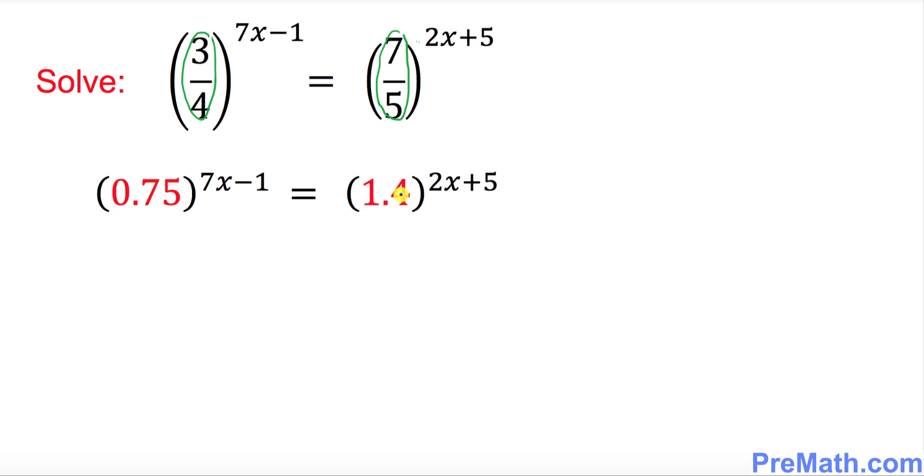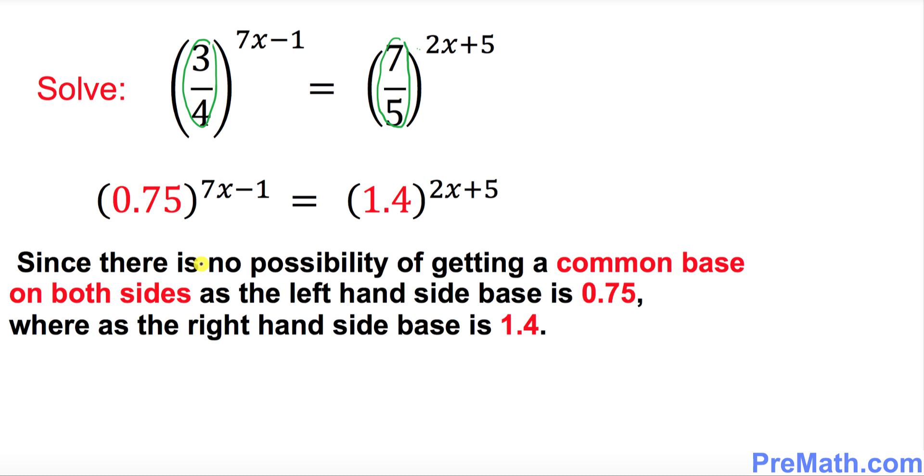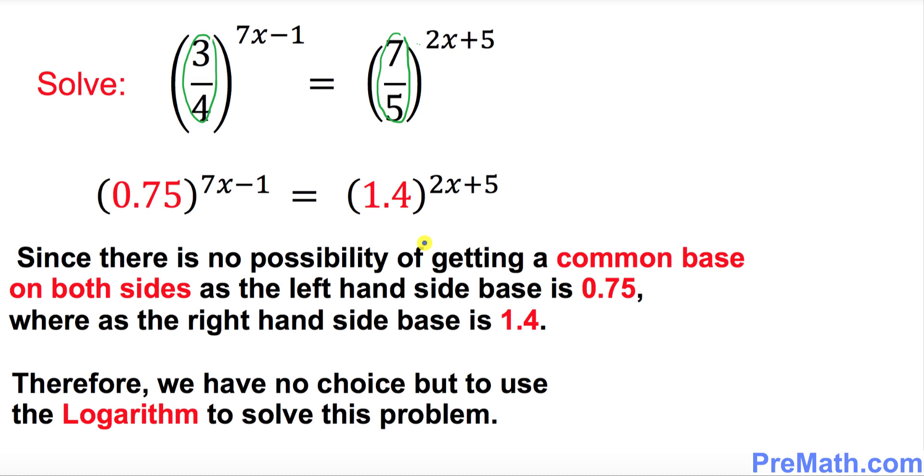And now we have to make a couple of observations. Since there is no possibility of getting a common base on both sides as the left hand side base is 0.75 whereas the right hand side base is 1.4, therefore we have no choice but to use the logarithm to solve this problem.